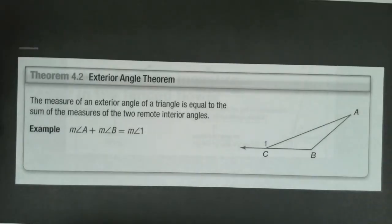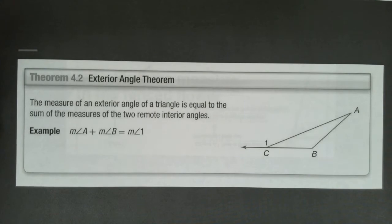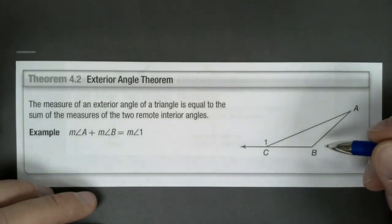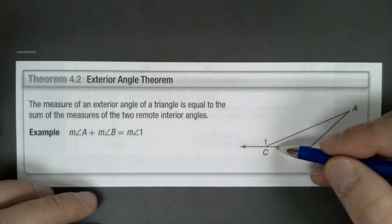Okay, our other theorem that we're going to look at this morning is called the exterior angle theorem. And here's what the exterior angle theorem says: it says the measure of an exterior angle of a triangle is equal to the sum of the measures of the two remote interior angles. Now it is important for us to understand what remote interior means in these problems. So you'll notice in this picture...